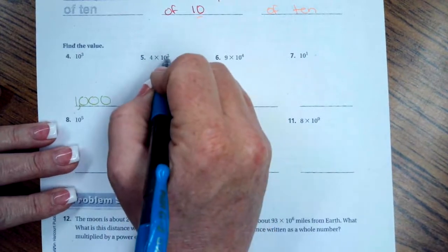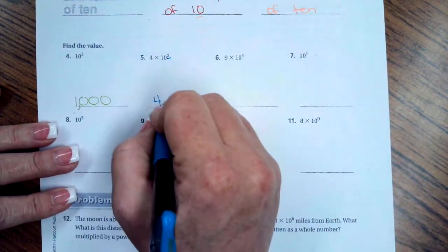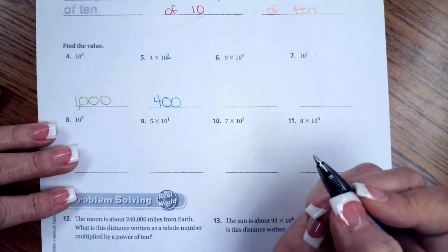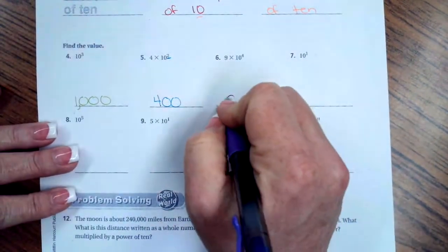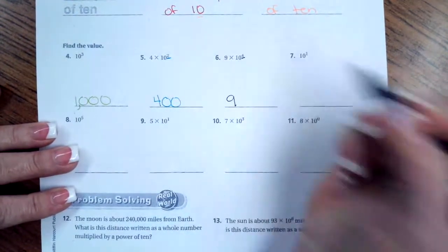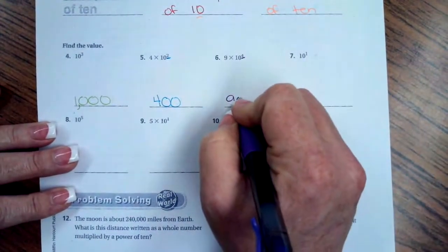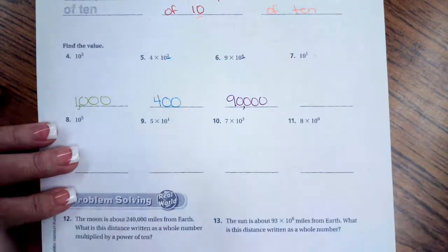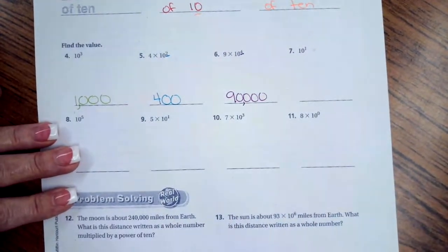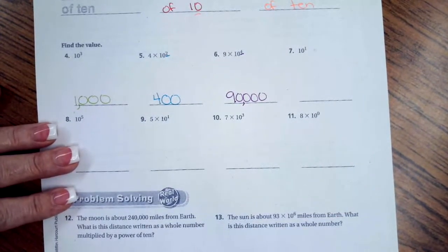Which means we have two zeros, which is the exponent, so your total is 400. Let's try one more. We have a nine, our exponent is four, so we're going to have one, two, three, four zeros—ninety thousand. You guys do the next ones. You totally can. I believe in you all the way up through eleven.